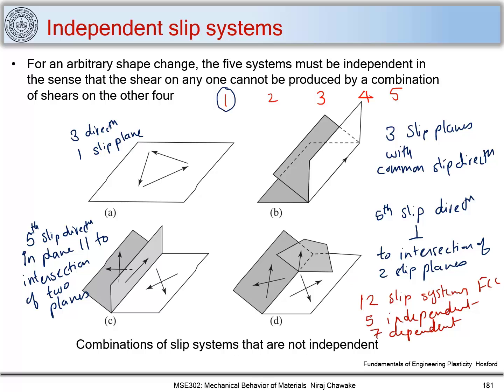To summarize: you need five independent slip systems to have ductility or to accommodate any arbitrary shape change. This is a very important point, and with this I will stop here.